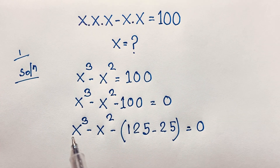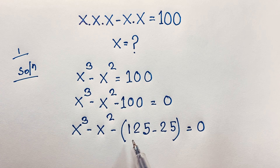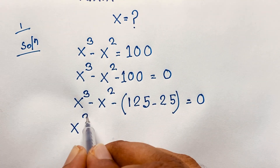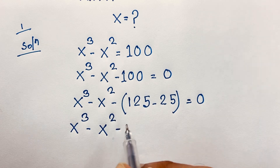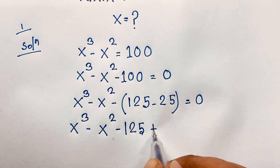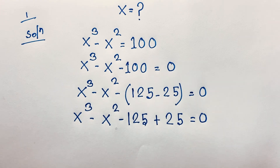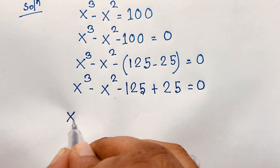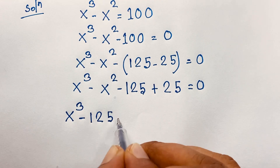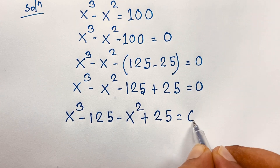Because this is a cubic equation with x to the power 3, and we know that 5³ = 125, we can use the cubic formula. So we rewrite: x³ - 125, then negative x² plus 25 equals 0, which gives us x³ - 125 - (x² - 25) = 0.